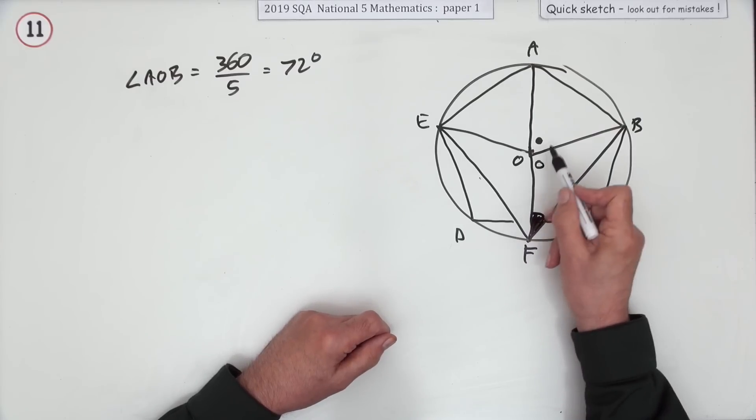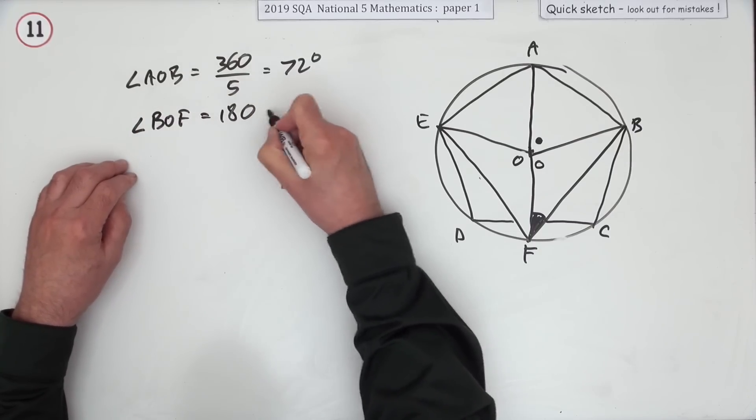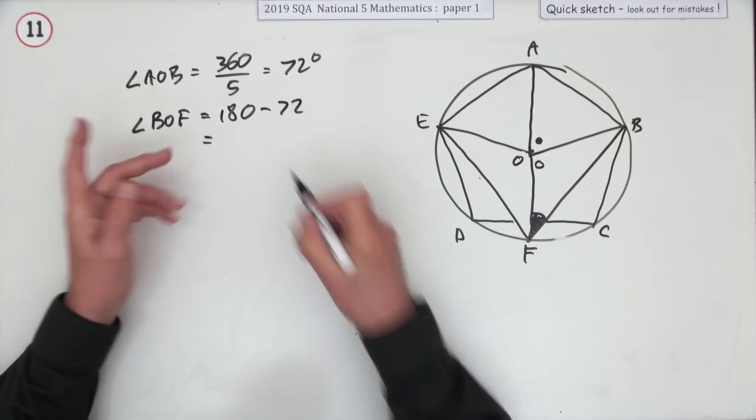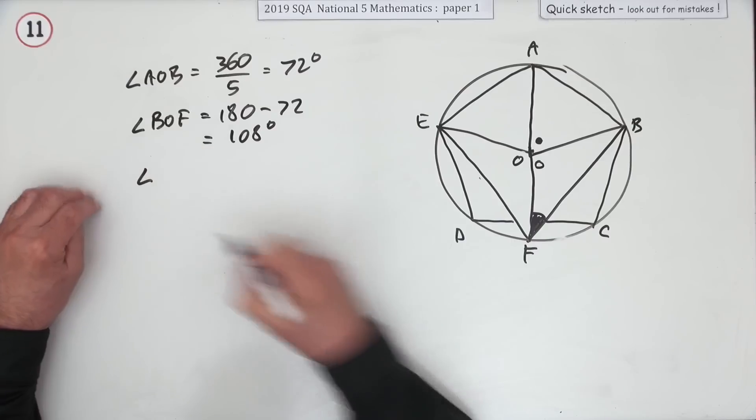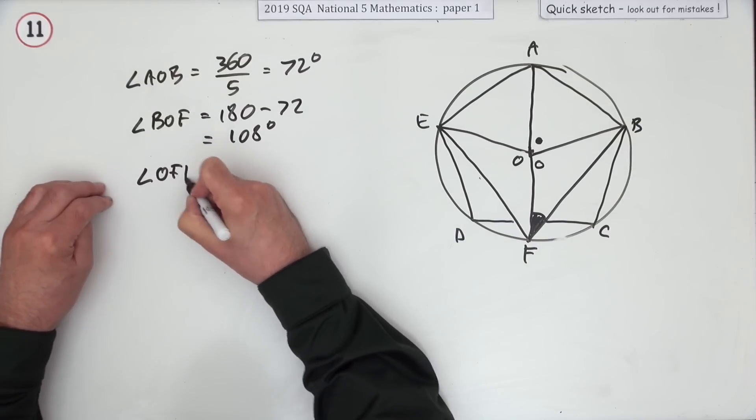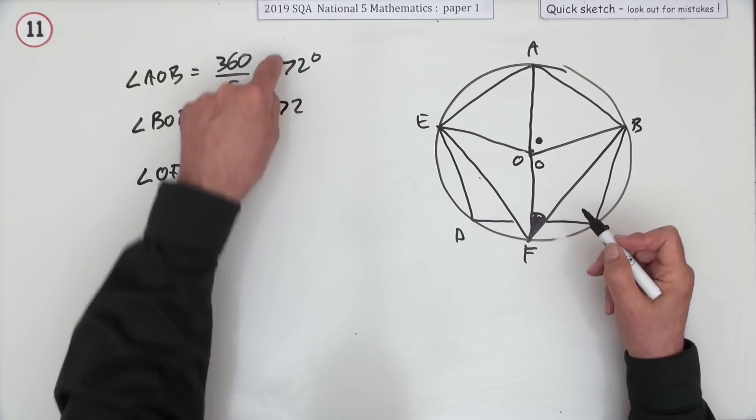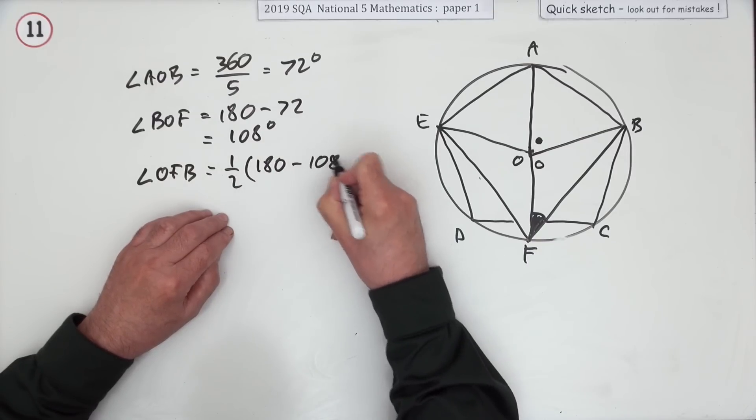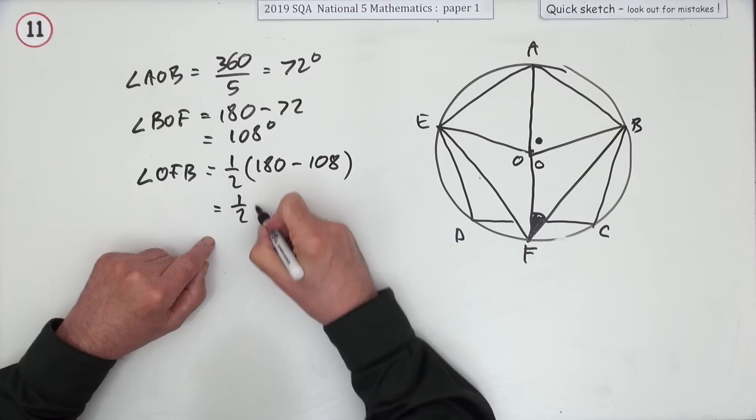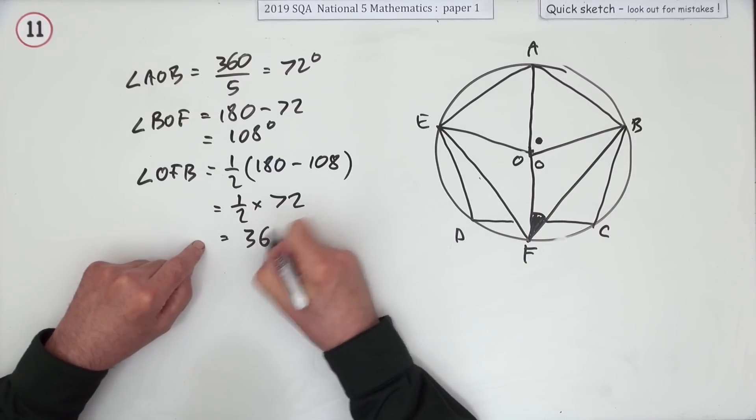If that's 72, that's going to be the supplementary angle, so angle BOF is going to be 180 minus 72, which is 108. Which means now the angle I want, OFB, since I know this one's 108, will be taken away from 180 and then halved. It'll be a half of 180 minus 108, that's why it seems so pointless. A half of 72, which I said at the beginning, the angle of circumference is half the angle of center, which is 36.